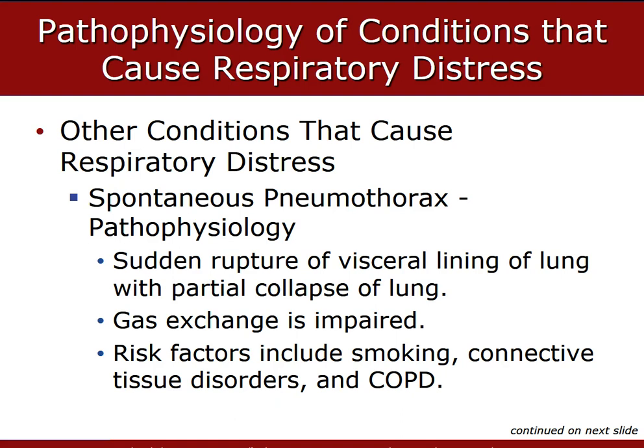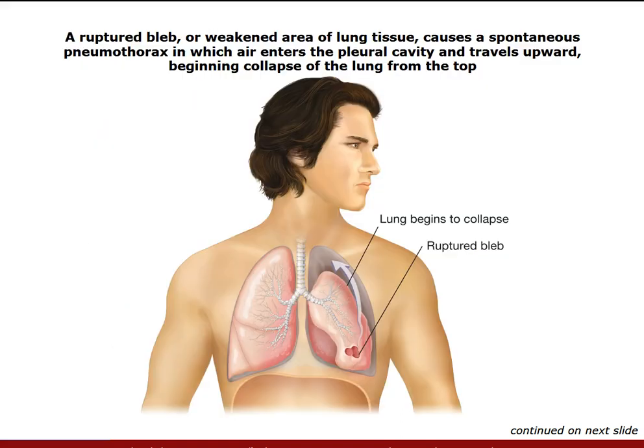As far as a pneumothorax, a spontaneous pneumo is when a portion of the visceral pleura ruptures without any trauma having been applied to the chest. The visceral pleura ruptures, allowing air to enter the pleural cavity, disrupting its normal negative pressure and causing the lung to collapse.